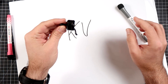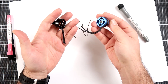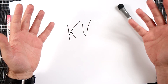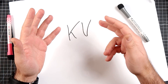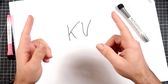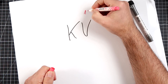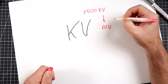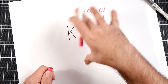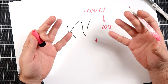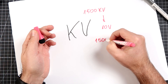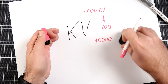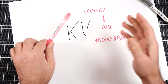Everybody knows KV when it's related to motors. This motor is rated at 2300 and this motor is rated at 1450. Everybody knows, because it's widespread knowledge, that KV stands for how fast the motor is rotating without load compared to the voltage. So if I have a motor of 1500 KV and I apply 10 volts, it's going to rotate at 15,000 RPMs. Everybody knows that, right?